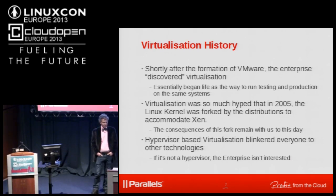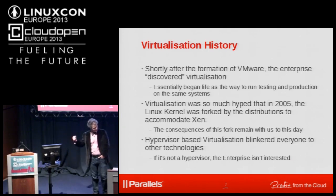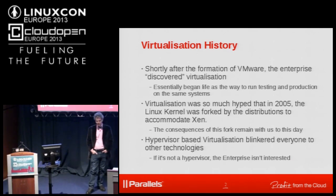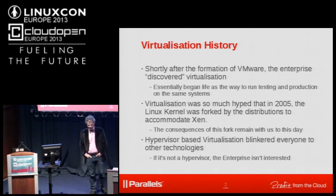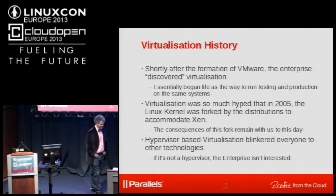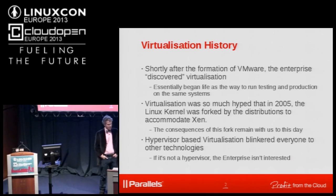KVM was still a gleam in Avi's eye and wasn't fully formed or submitted upstream at that stage. The consequences of this fork have remained with us till today. Trying to get the Xen fork out of the distro's kernel has been almost a decade-long effort, and it convinced distributions that putting stuff in that's not upstream is really the wrong thing to do.